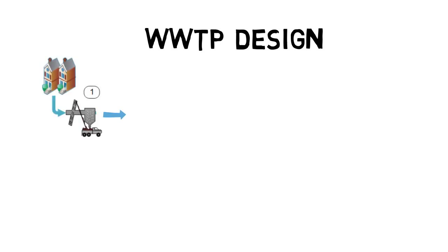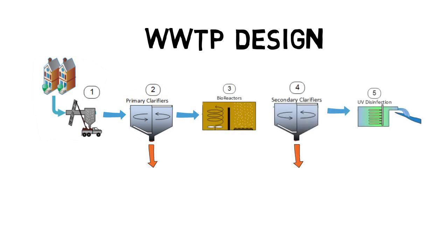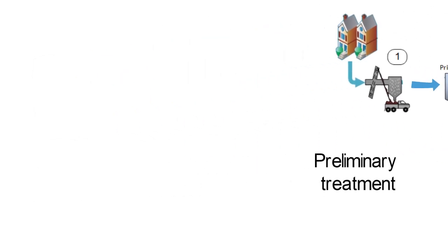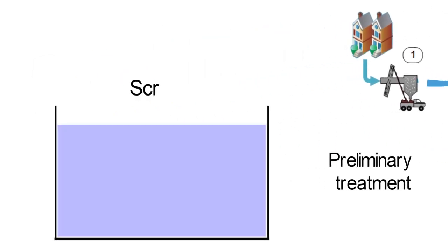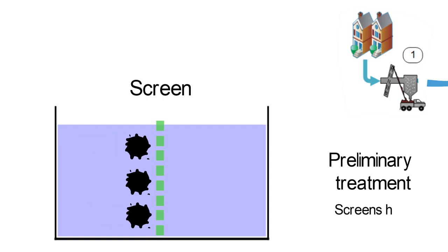WWTPs can present slight variations to address specific issues found in certain effluents. However, the system is most commonly composed of a preliminary treatment where the use of grades, coarse and fine screens is seen to remove objects that are found in the effluent.